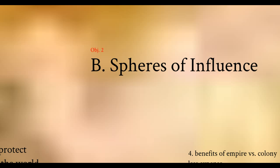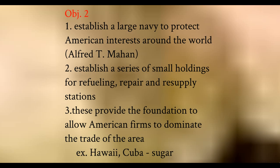Spheres of influence are little pockets of military and economic power. The United States gets involved in this. Alfred T. Mahan, Secretary of the Navy at the time, urges Congress that if we are going to seek out new territories and markets and establish ourselves overseas, we have to have a way to protect those American investments. If we want to buy sugar plantations in Cuba, we have to be able to protect American property and people working in foreign countries.